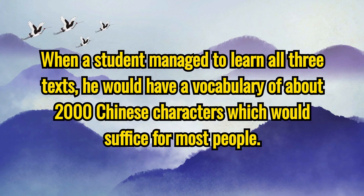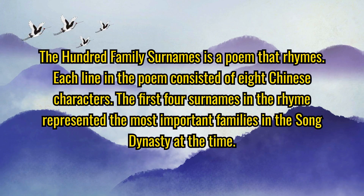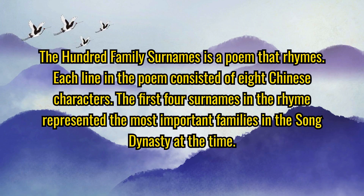When a student managed to learn all three texts, he would have a vocabulary of about 2,000 Chinese characters, which would suffice for most people. The Hundred Family Surnames is a poem that rhymes. Each line in the poem consisted of eight Chinese characters. The first four surnames in the rhyme represented the most important families in the Song Dynasty at the time.